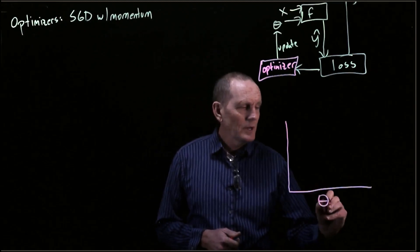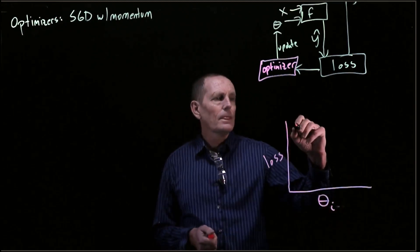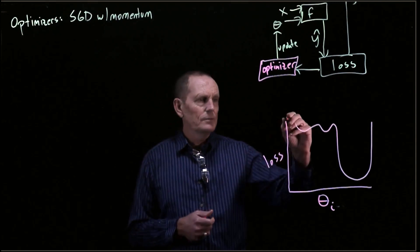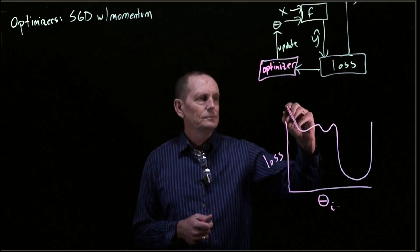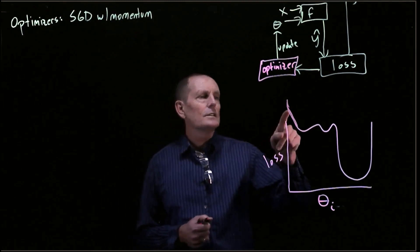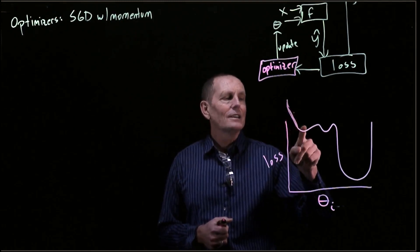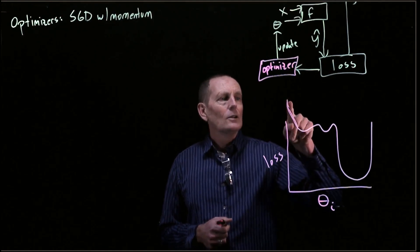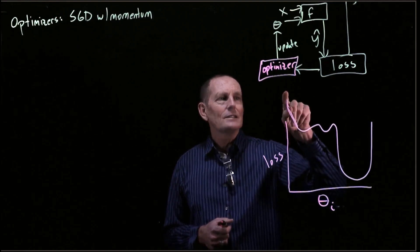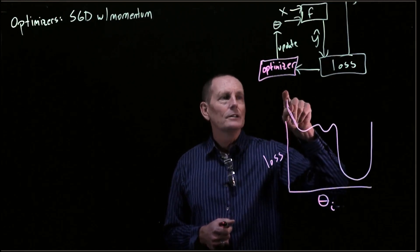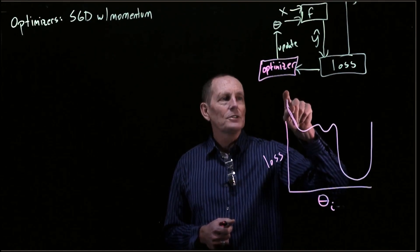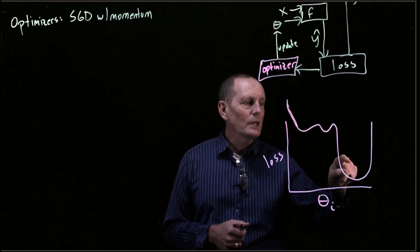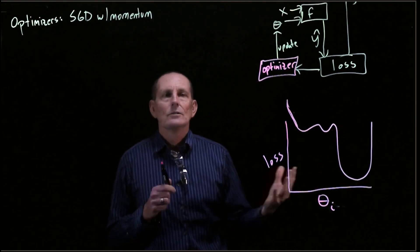The one we're going to start with is standard gradient descent with momentum. Let's say we've got some theta sub i and some loss. If we're using standard gradient descent and a small learning rate, we may get stuck in a local optimum. What momentum suggests is: imagine a ball rolling downhill. If that ball starts high enough and gets enough momentum, it's going to go shooting past local optima and make it all the way into the global optimum.